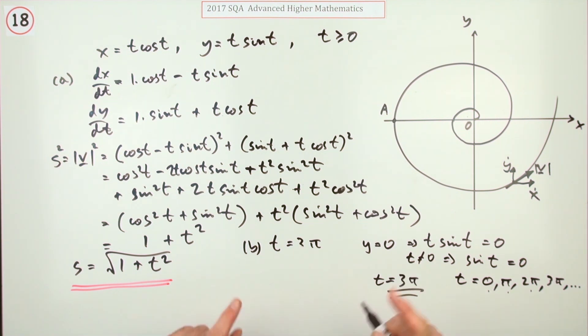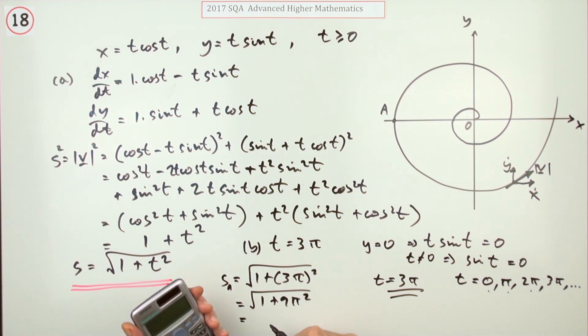So what was its speed then? Well, the speed at that point, I think it was called A, would be the square root of 1 plus 3π squared. There's not a lot you can do with that—the square root of 1 plus 9π squared.